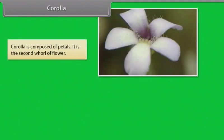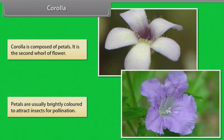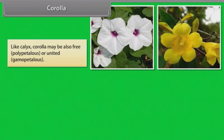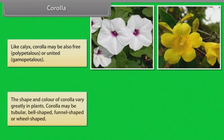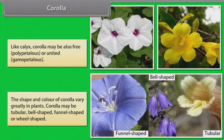Corolla is composed of petals and is the second whorl of the flower. Petals are usually brightly colored to attract insects for pollination. Like calyx, corolla may also be free (polypetalous) or united (gamopetalous). The shape and color of corolla vary greatly in plants. Corolla may be tubular, bell-shaped, funnel-shaped, or wheel-shaped.